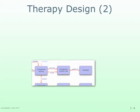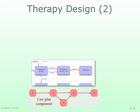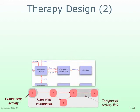Next, we have a small group of data object classes that define the workflow that links the activities together in such a way that they can be automated by the Stroke Rehab app. To illustrate how this works, this diagram shows a simple care plan component — a very simple therapy program — as consisting of five activities represented by five component activity data objects and five links represented by five component activity link data objects.